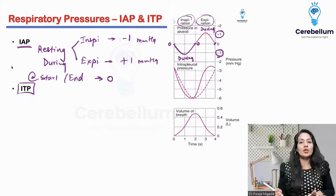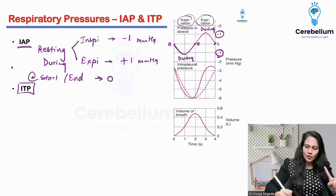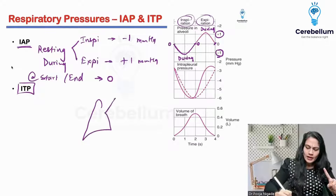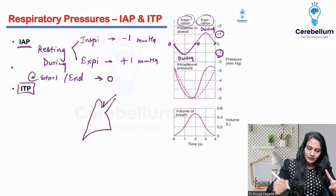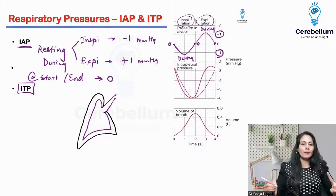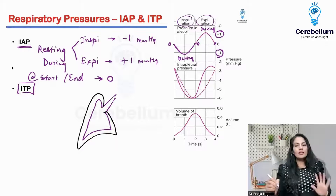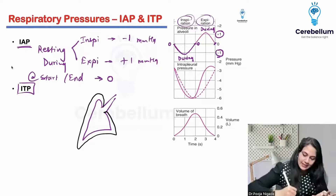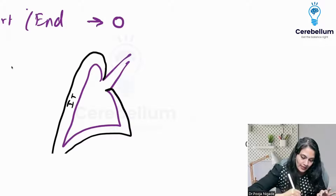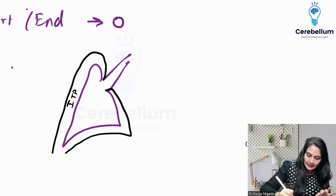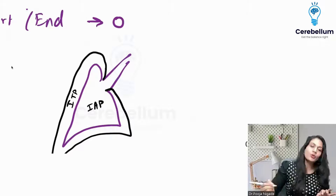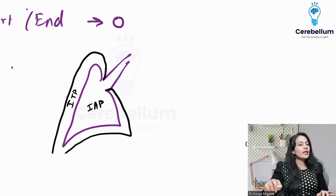What is intrathoracic pressure? ITP stands for intrathoracic pressure. This is my lung, and this is the pleura. Inside the pleural space, whatever pressure is there, that is called intrathoracic pressure. Inside the alveoli, whatever pressure is there, that is called intra-alveolar pressure.